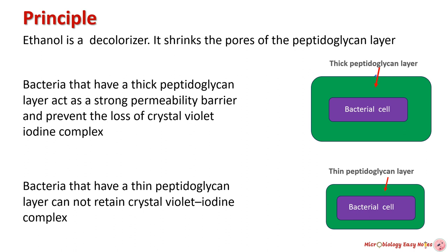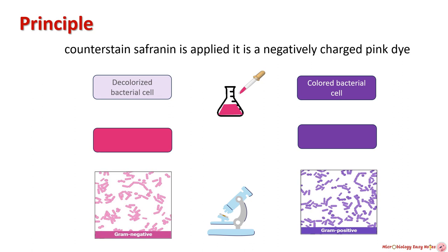Then bacteria are treated with ethanol, which is a decolorizer. Ethanol shrinks the pores of the peptidoglycan layer. Bacteria with a thick peptidoglycan layer act as a strong permeability barrier and prevent the loss of the crystal violet-iodine complex. Bacteria with a thin peptidoglycan layer cannot retain the crystal violet-iodine complex. Finally, the counterstain safranin is applied — a negatively charged pink dye. Safranin stains the decolorized cells, which appear pink or red under a microscope and are called gram-negative cells. Safranin cannot stain gram-positive cells due to the retained crystal violet-iodine complex, so these cells appear violet and are called gram-positive cells.